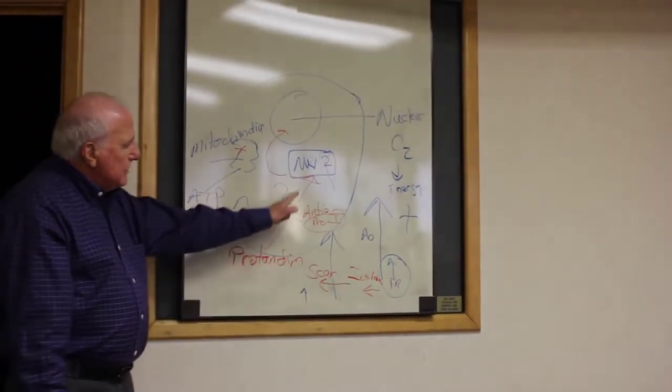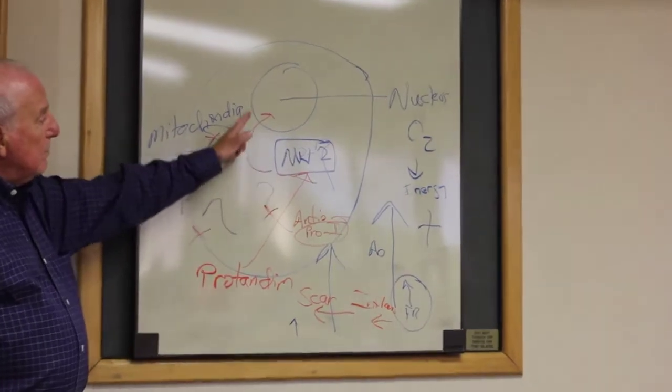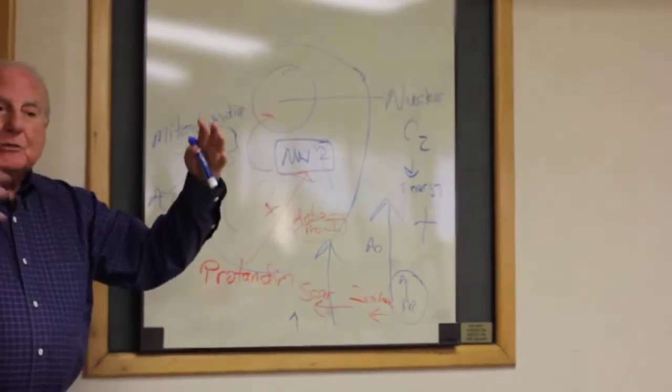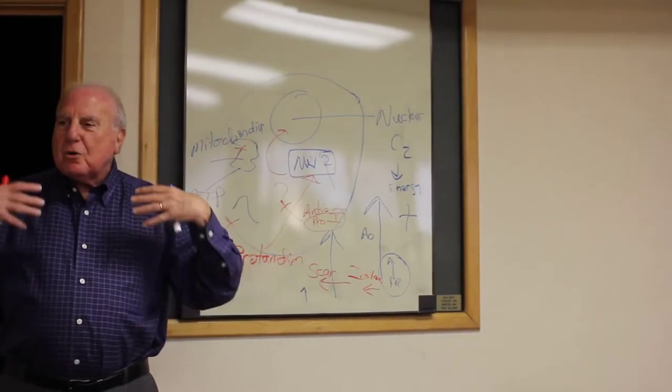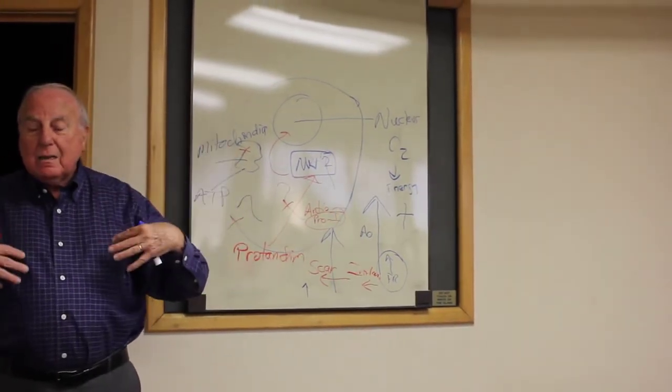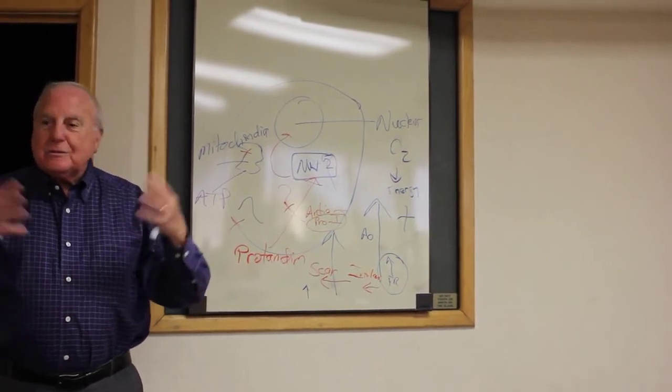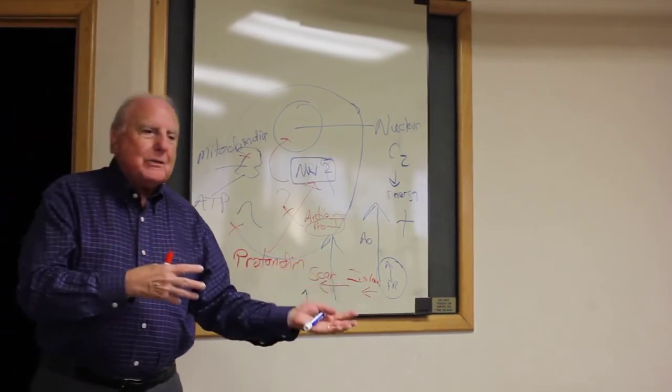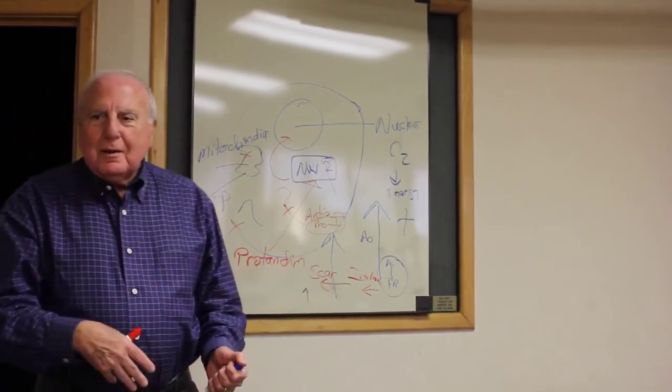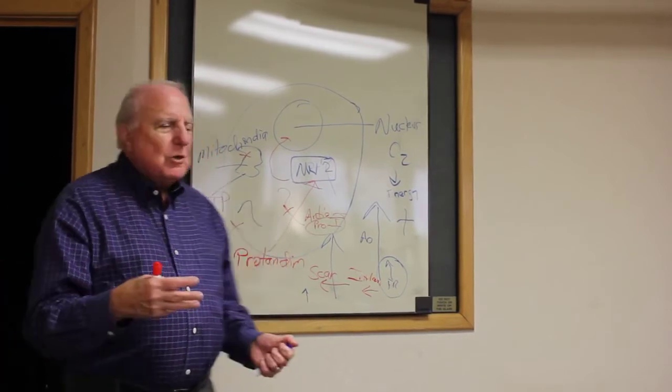When Protandim is given, NRF2 sends a message to the nucleus and we start making life-saving enzymes and we turn our machinery back to making antioxidants. We make millions per second. There is nothing we can take in by mouth that will do that. Nothing can replace the beauty of our own cells creating their own antioxidants. So powerful.